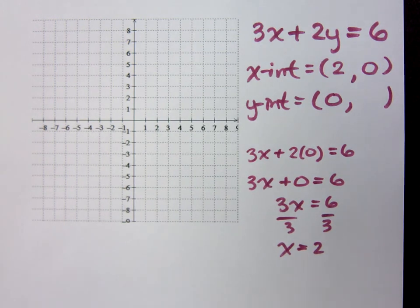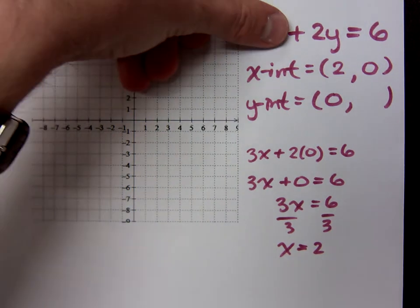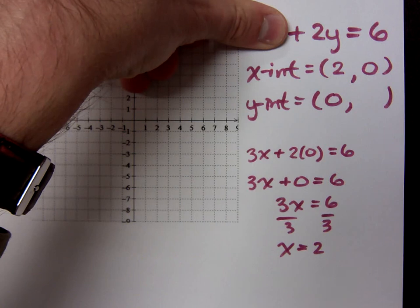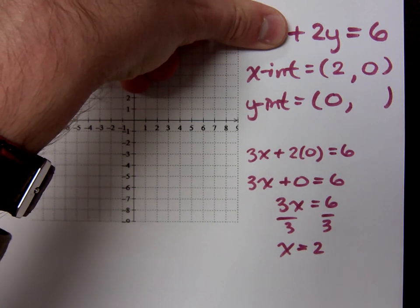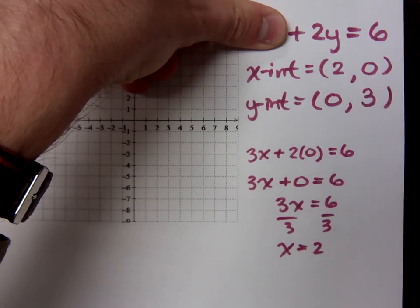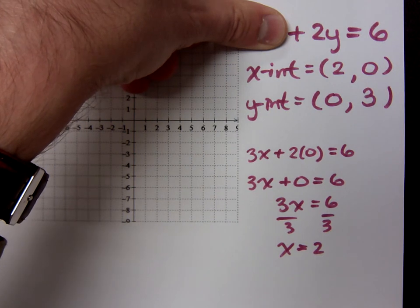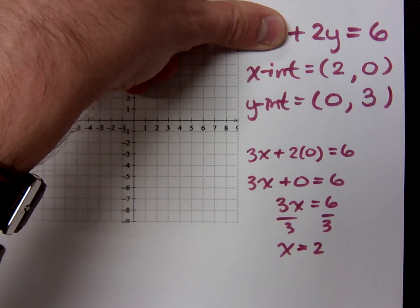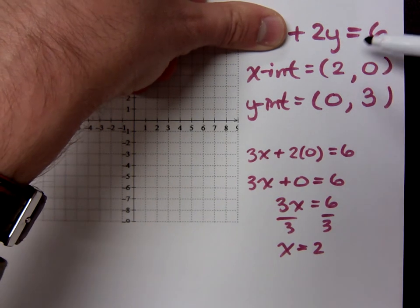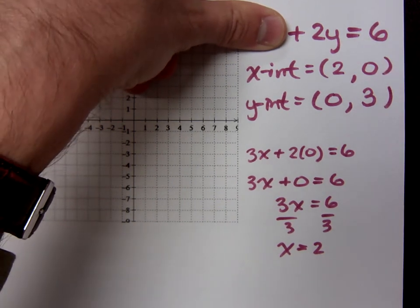For the Y-intercept, X is 0, so all you have to do is cover that term up. If X is 0, I see that 2Y equals 6. You could just look at this and divide both sides by 2, and Y equals 3.